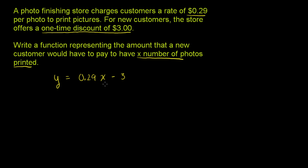If you wanted to get fancy, this is a little bit inaccurate when the customer orders less than 10 photos. Because if the customer orders 10 photos, x = 10, times $0.29 is $2.90, minus 3 is negative 10 cents. The customer is not going to pay negative 10 cents — that would be like the store paying them to print photos. The customer's not going to pay anything.